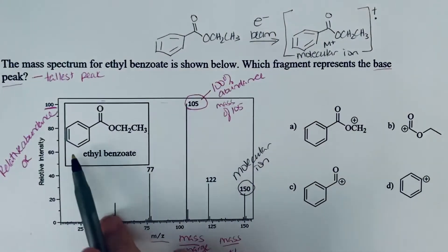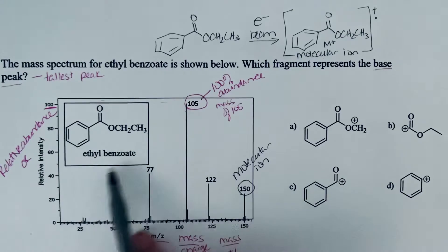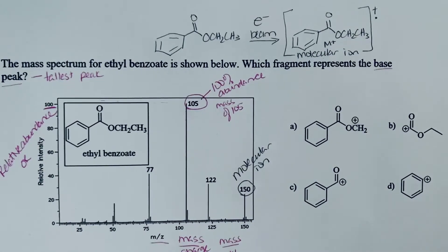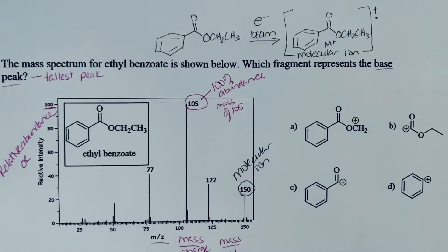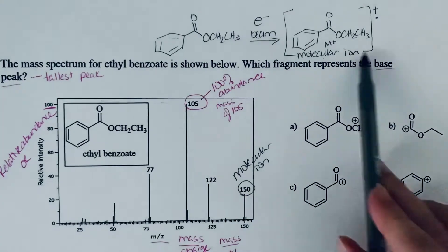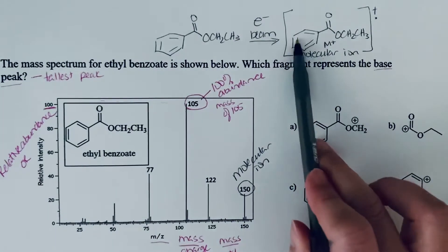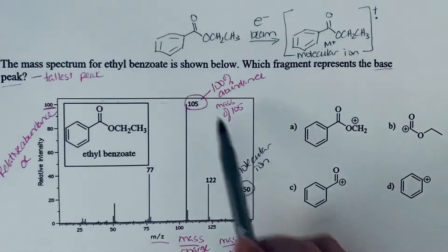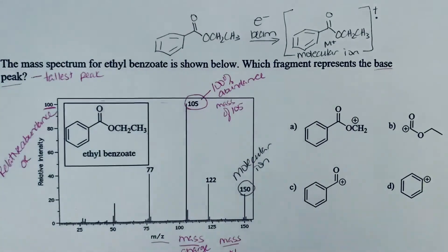If you were to add up all the carbons, hydrogens, and oxygens in ethylbenzoate and calculate the weight, you'd find out that it weighs 150 atomic mass units or grams per mole. But we're looking for this peak at 105, so we want to know what has been lost from the molecule.